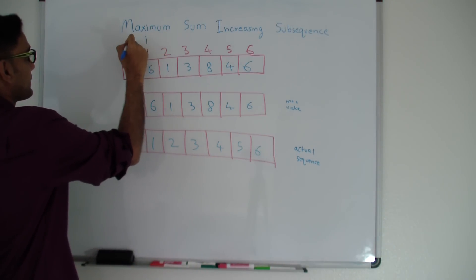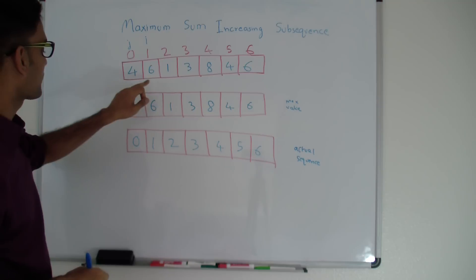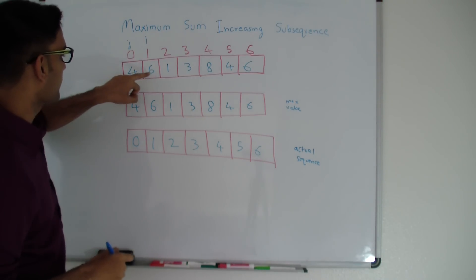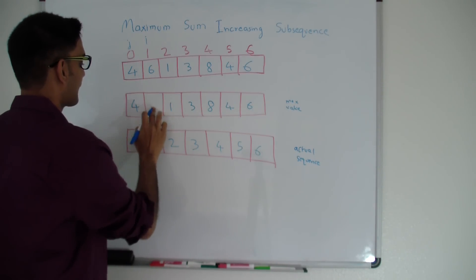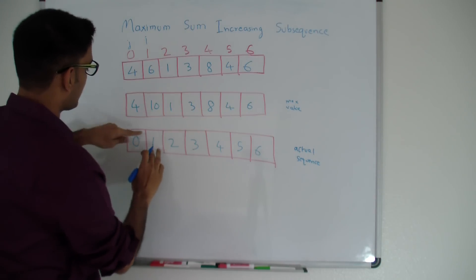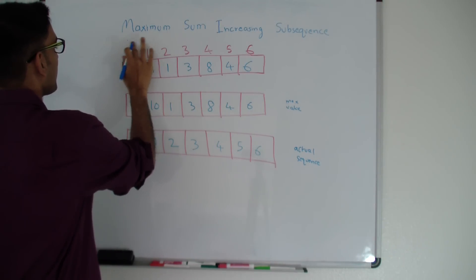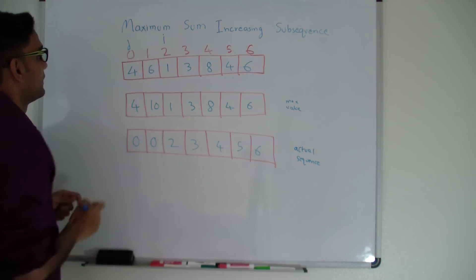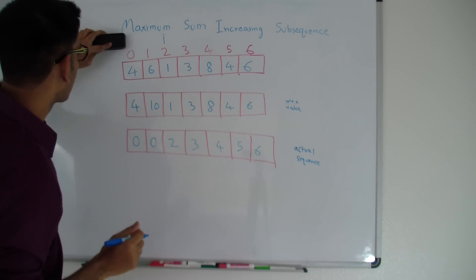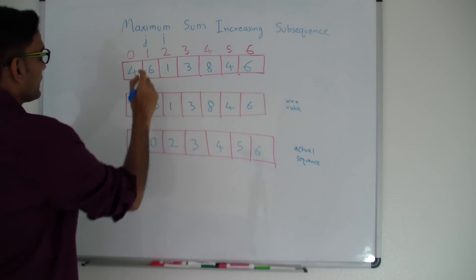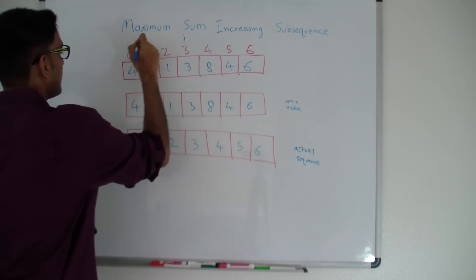I'll start my i from 1 and my j from 0. If the input at j is less than input at i, the maximum sum increasing subsequence at i will be whatever we found till j plus input of i. So for i=1, value is 6, j=0 value is 4: 4 is less than 6, so we get 4 plus 6 = 10. I'll also indicate that this value is coming from index 0. For i=2 (value 1), neither j=0 (4) nor j=1 (6) is less than 1, so this can't be extended.